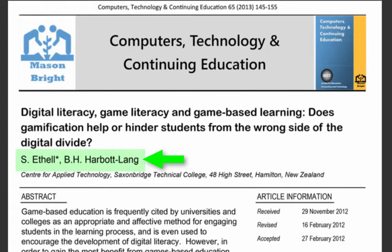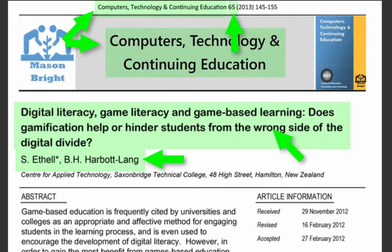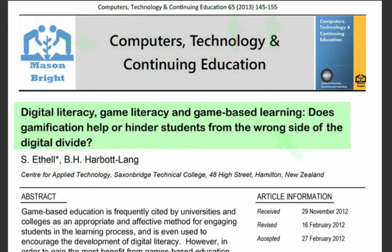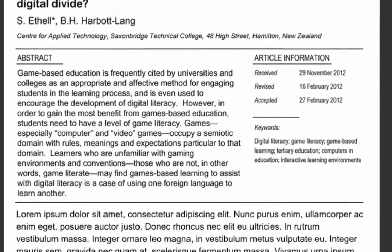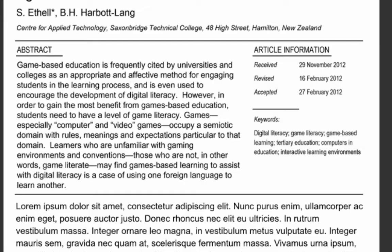The author, article title and journal details — including name, volume and pages — are all clearly visible on the first page of this article. Also note that the article title is a descriptive one; it clearly tells us what the article is about. The article itself is divided into sections that clearly indicate the contents. There's an abstract that summarizes the article, and there are keywords that describe the subjects that will be discussed within the article. Reading both of these helps us figure out if this is an article we'd like to explore further.